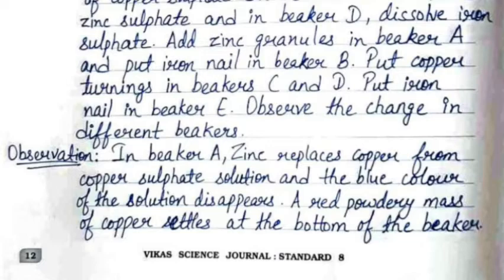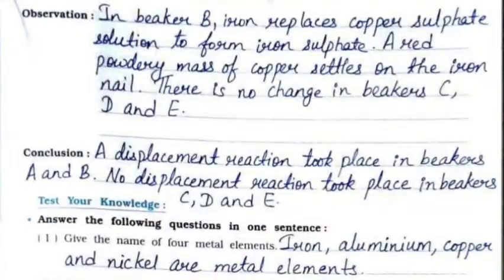Observations: In beaker A, zinc replaces copper from the copper sulfate solution and the blue color of the solution disappears; a red powdery mass of copper settles at the bottom. In beaker B, iron replaces copper from the copper sulfate solution to form iron sulfate; a red powdery mass of copper settles on the iron nail. There is no change in beakers C, D, and E. Conclusion: A displacement reaction took place in beakers A and B; no displacement reaction took place in beakers C, D, and E.